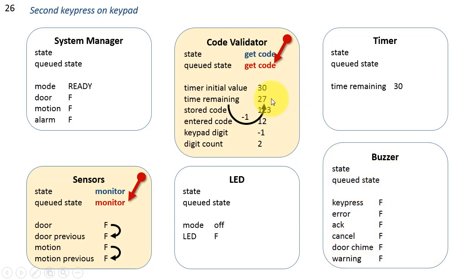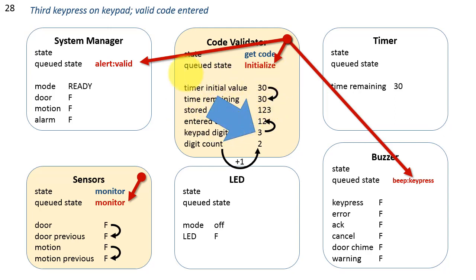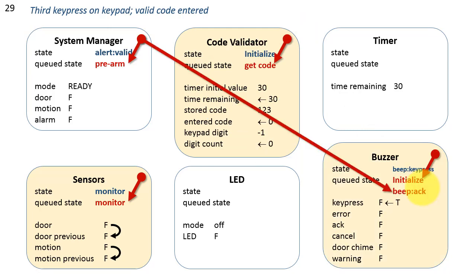Here's the third digit entered. 12 combined with 3 is 123, which matches what we're looking for. The digit count, 2 plus 1, is now 3. The code validator declares a match and issues the message alert valid to the system manager, enqueues the initialized state, and kicks out another keypress message to the buzzer. Advancing time, the system manager has received the valid code entered alert, enqueues the prearm state, and issues the acknowledge message to the buzzer.